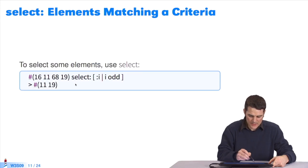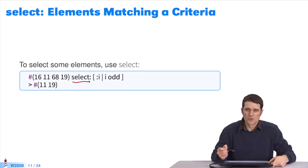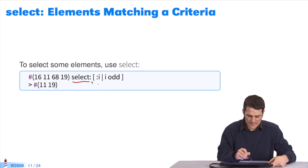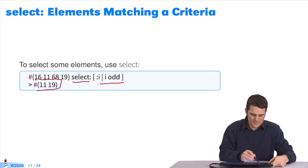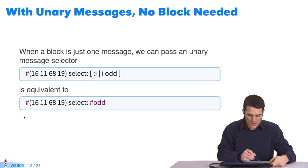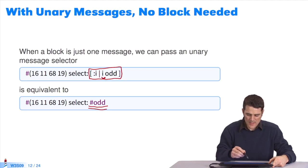This is a new iterator: select. I want to get all the elements of the collection which match a criterion. I want all the odd elements of the collection. I send select to the collection. I pass a block. Whenever the value of the block is true, the element concerned is added to the result collection. It's exactly the same as select: odd. When I have a block here, or what amounts to a single message send to the element of the collection, the block's parameter, I can display the name of the message to be sent as a symbol. It's even shorter. It only works with unary messages.